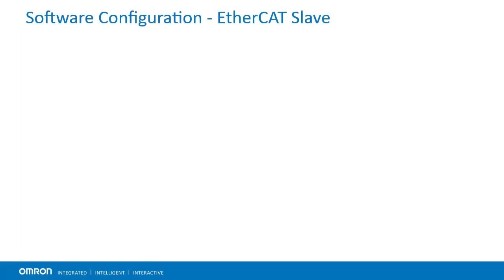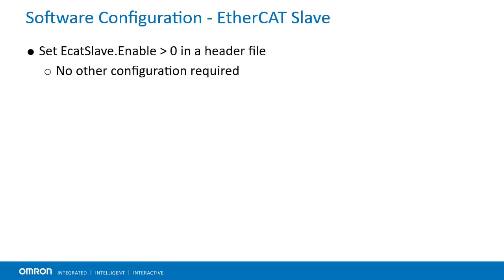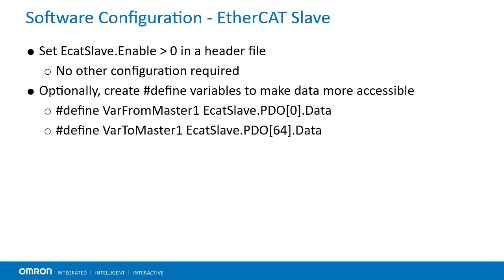Configuring the EtherCAT Slave is very simple. All a user must do is set ECATSlave.enable equal to 1, 2, or 3, depending on which clock they want to use. It is recommended to do this in a header file, then download and save it to the PMAC so the device automatically enables EtherCAT Slave functionality on boot. While not necessary, it may be helpful to create pound-defined names for the EtherCAT parameters so you can give registers more helpful names. Remember, index 0 is your first index written by the master to the slave, and index 64 is your first index written by the slave to the master.